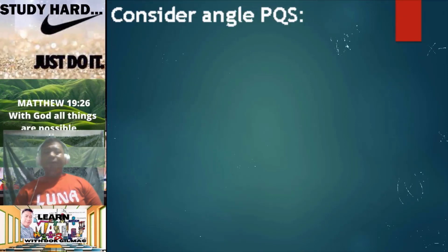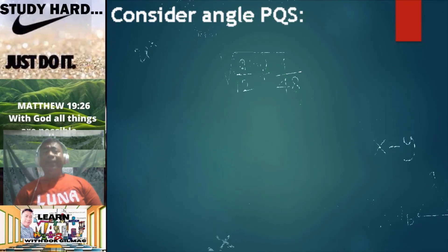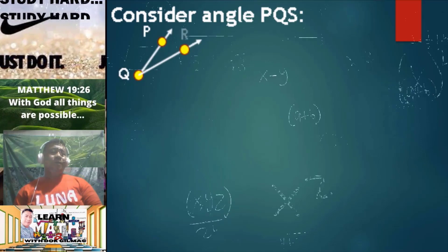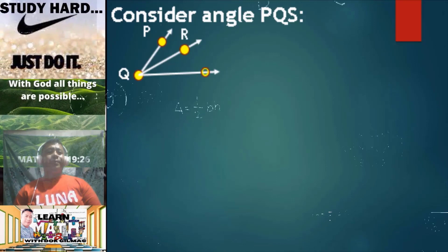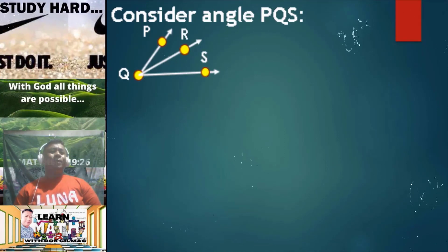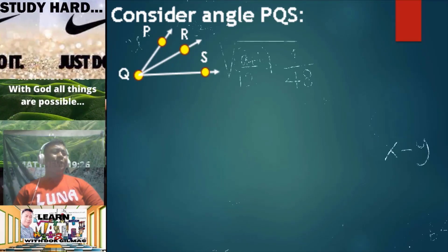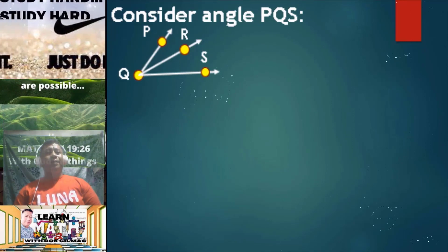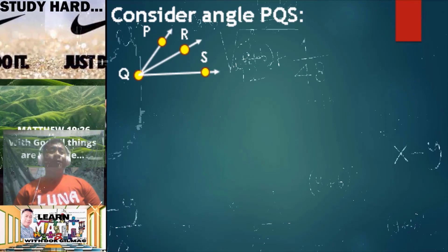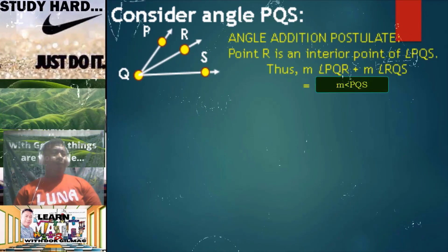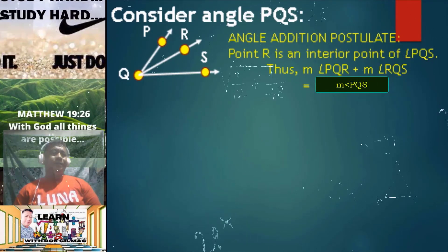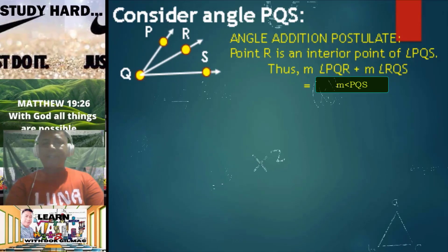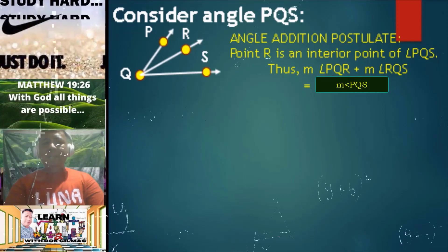Consider angle PQS. Angle PQS is formed by three intersecting rays: ray QP, ray QR, and ray QS. As you can see in the given figure, the measure of angle PQR plus the measure of angle RQS will give you the measure of angle PQS. This is simply the angle addition postulate. Point R is an interior point of angle PQS. Thus, the measure of angle PQR plus the measure of angle RQS is just equal to the measure of angle PQS.